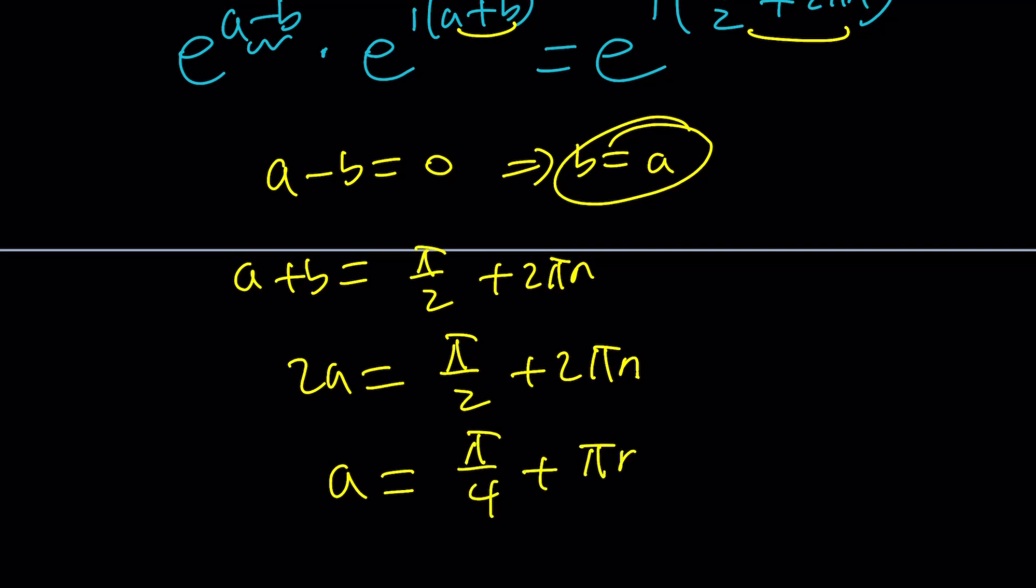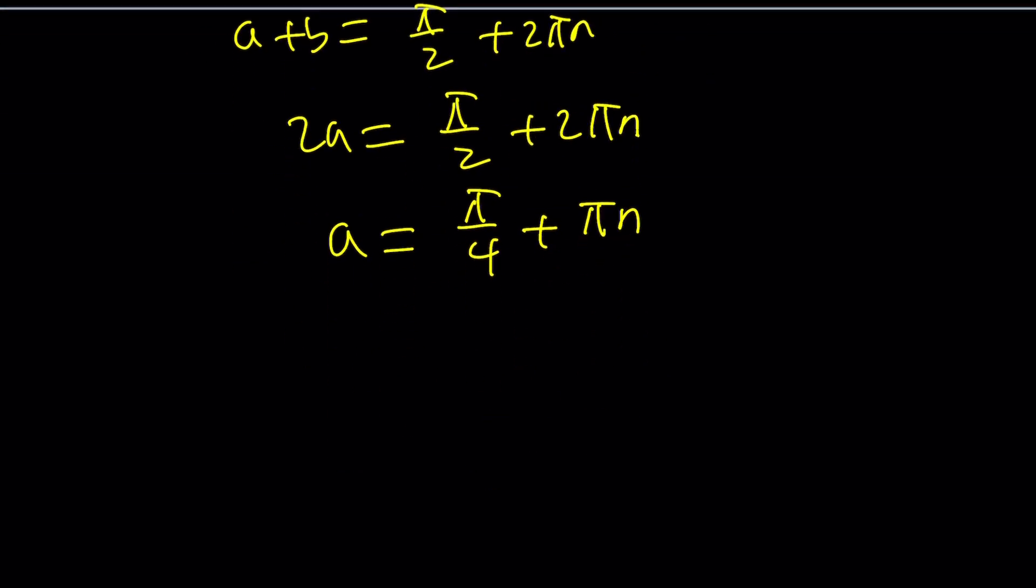So if you replace b with a you're going to get 2a equals pi over 2 plus 2 pi n and then from here a becomes pi over 4 plus pi n that's my a and I do need my b but b is the same thing so if you kind of put it together you can write the z. We're also going to be looking at the result from Wolfram Alpha and we'll compare our answer to that. But anyways let's just do this without using a plus bi.